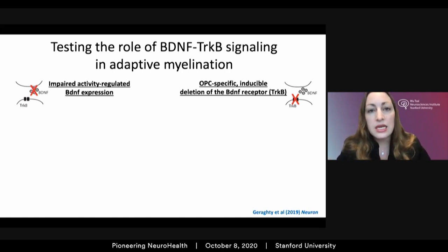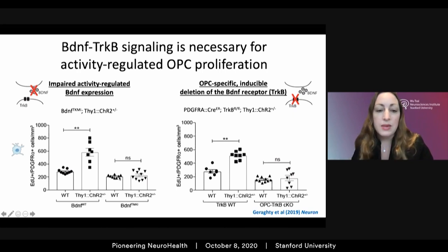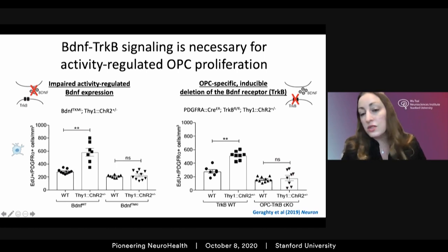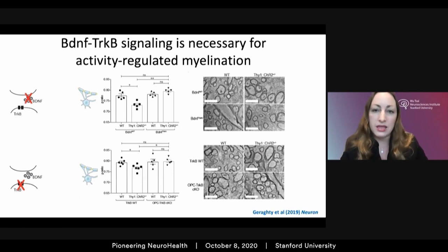In both mouse models, when we optogenetically stimulated cortical projection neuronal activity, the expected activity-dependent oligodendroglial response was lost. Mice that either lacked activity-dependent expression of BDNF, or lacked OPC-specific expression of the TrkB receptor, showed no oligodendrocyte precursor cell proliferation, no new oligodendrogenesis, and no change in myelin ultrastructure. While this mechanism is certainly more complex than BDNF-to-TrkB signaling alone, it gives us a molecular handle to specifically manipulate activity-dependent responses of myelin while leaving homeostatic myelination intact.